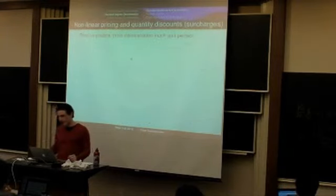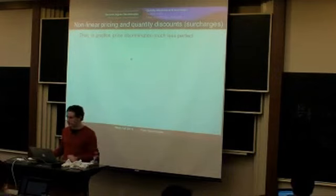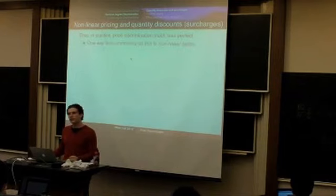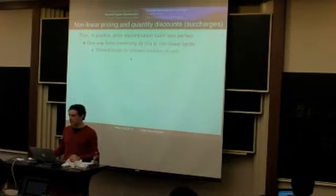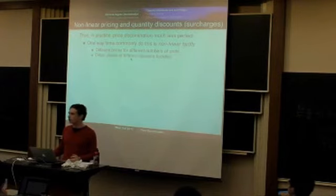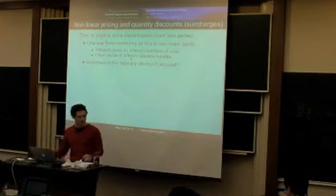In practice, because perfect price discrimination is so hard to achieve, companies use what's called nonlinear pricing or nonlinear tariffs — charging different prices if you buy different numbers of units. One common way to do this is to have a large package be cheaper per unit than a small package.